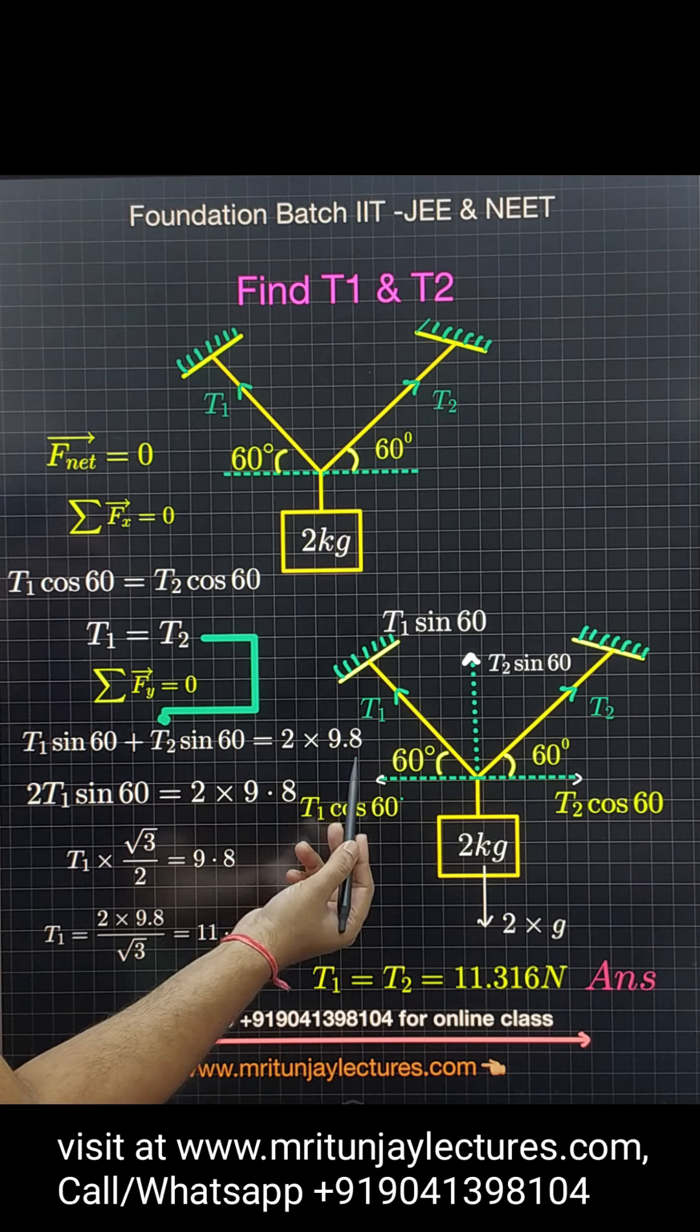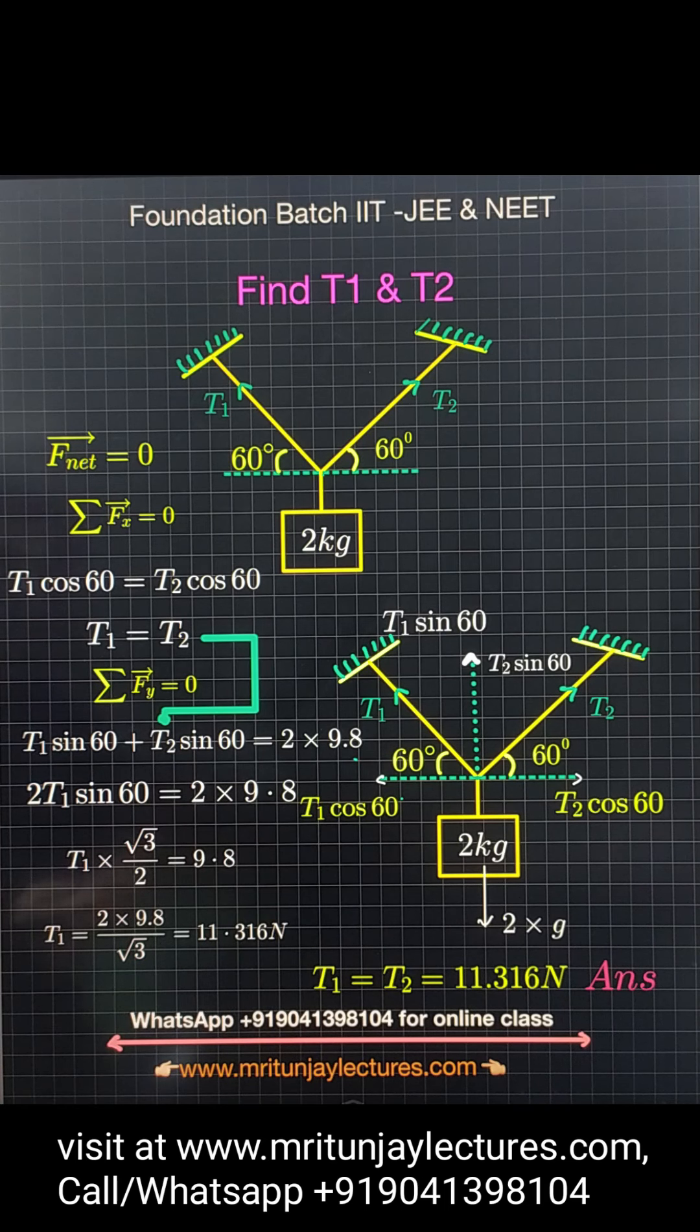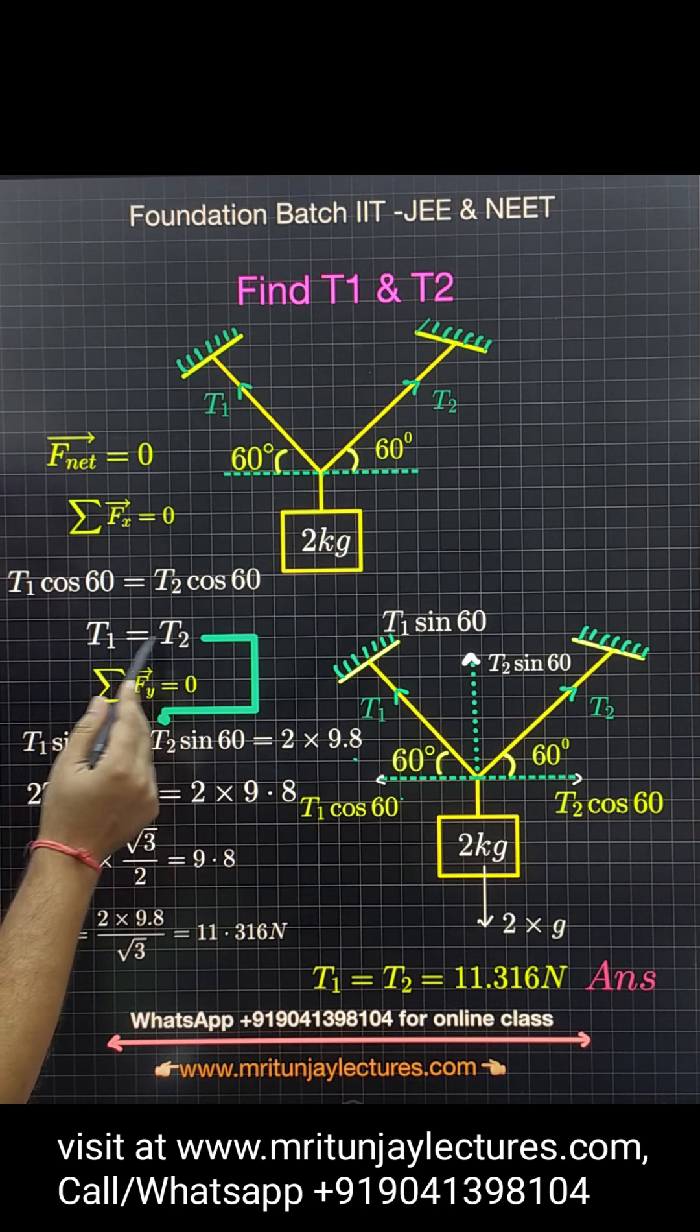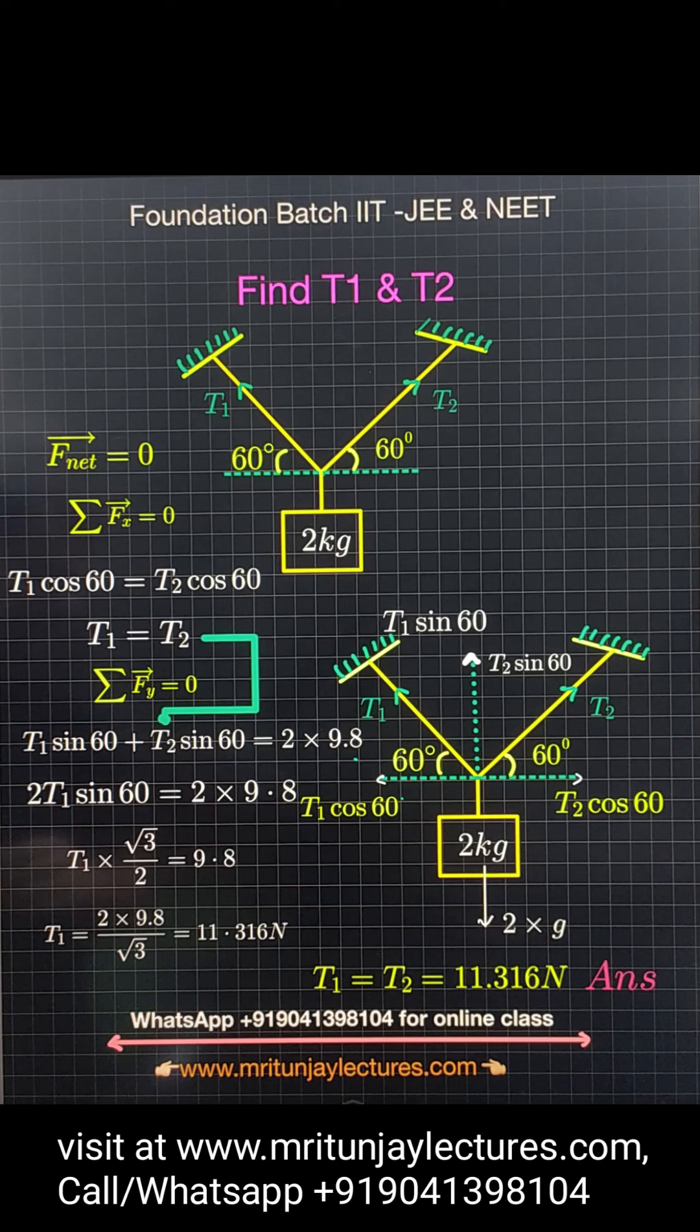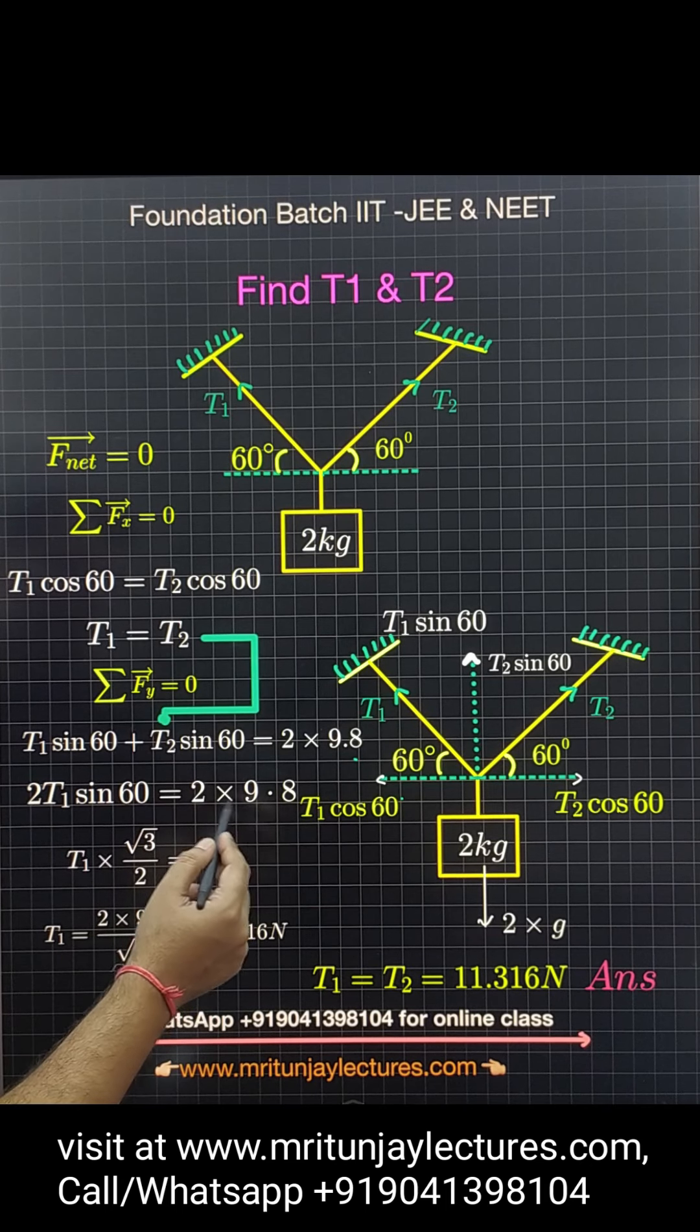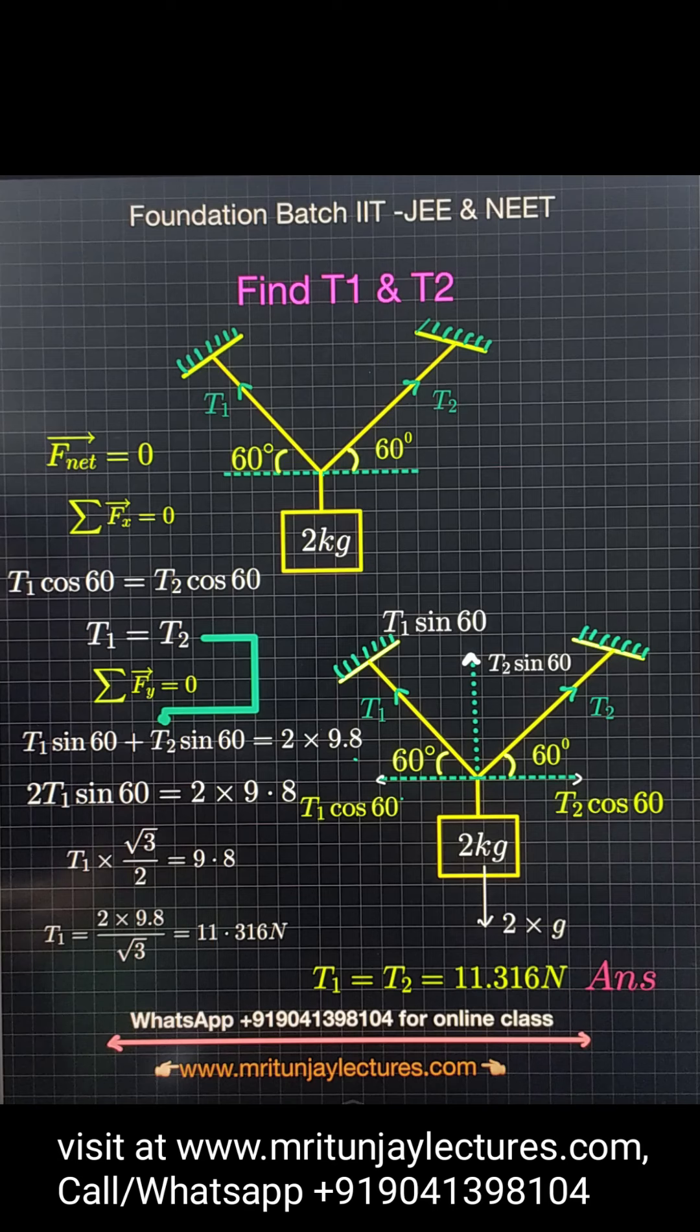Since T1 equals T2, we substitute to get T1 sin 60 plus T1 sin 60, which is 2T1 sin 60 equals 2g. That's 2 times 9.8.